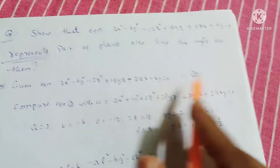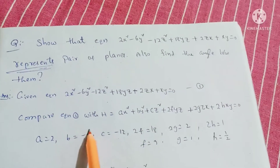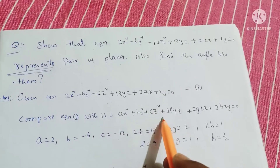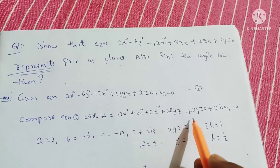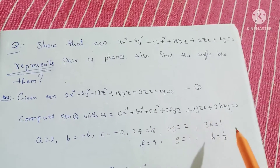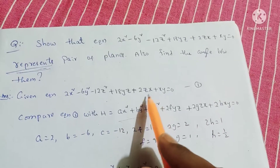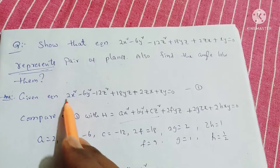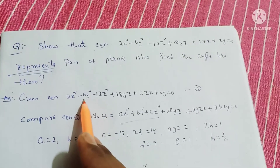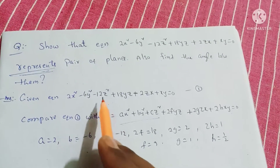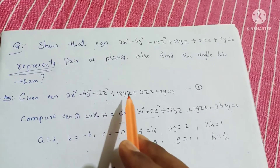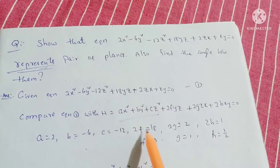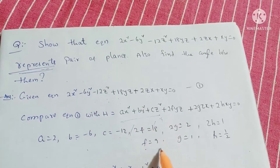Let's compare the given equation with the general form: ax squared plus by squared plus cz squared plus 2fyz plus 2gzx plus 2hxy equals 0. Comparing coefficients: a equals 2 (coefficient of x squared), b equals minus 6 (coefficient of y squared), c equals minus 12 (coefficient of z squared). From 2f equals 18, f equals 9.